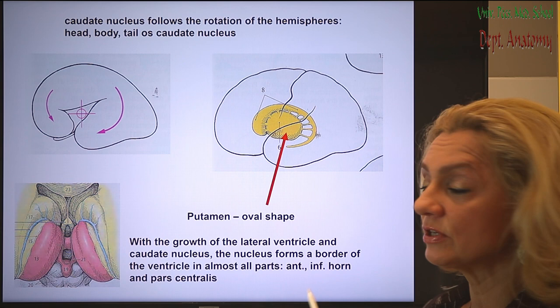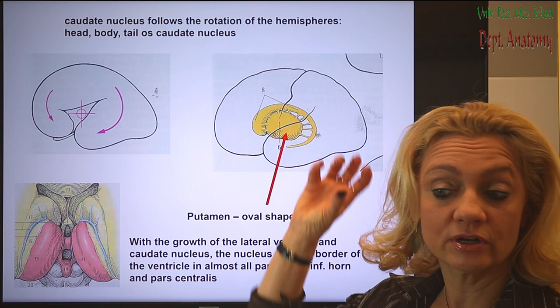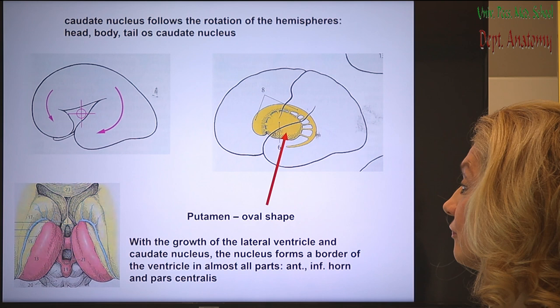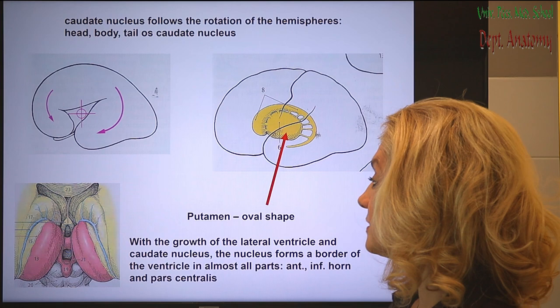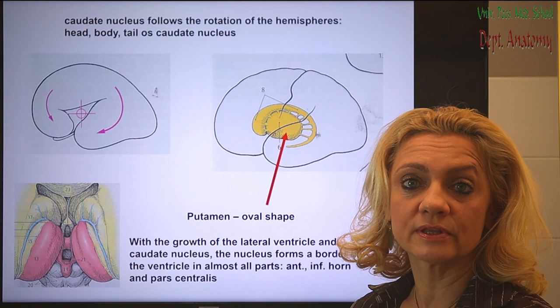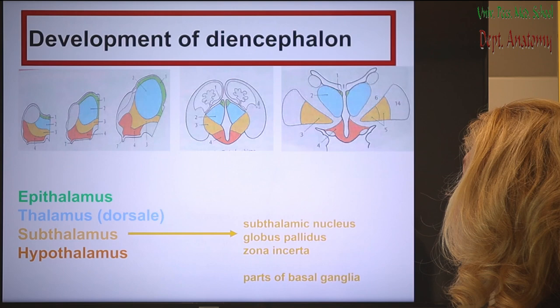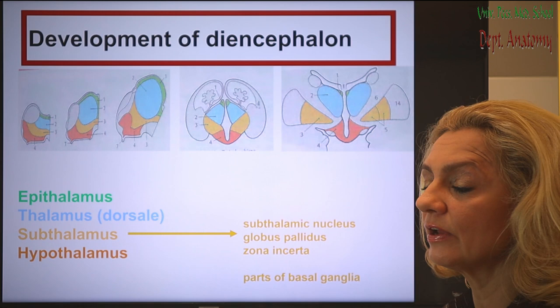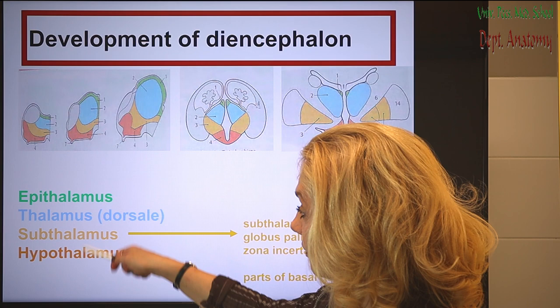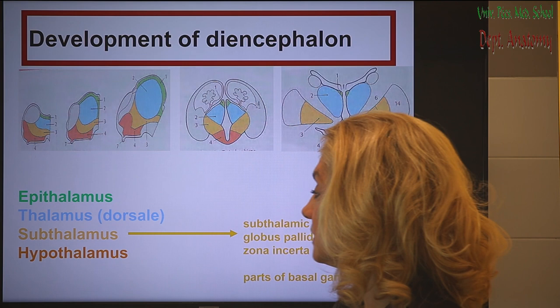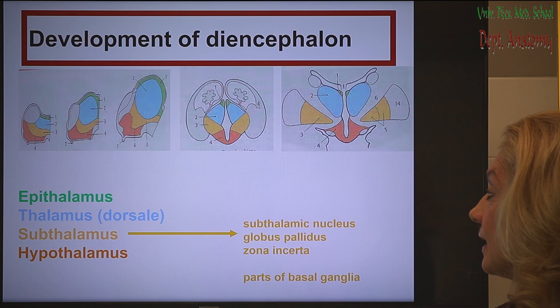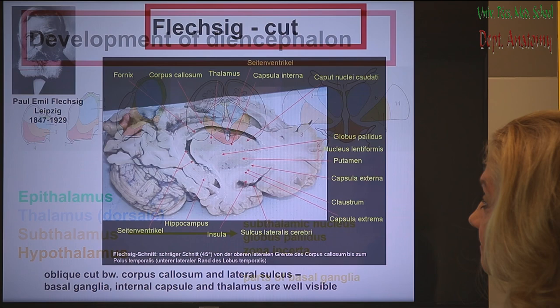The putamen does not follow this rotation, so it retains its oval shape. The lateral ventricle also follows this growth with the telencephalon and hemispheres. This is why the caudate nucleus borders parts of the lateral ventricle in almost every part except the occipital lobe. The other members of the basal ganglia develop from the subthalamus, which is part of the diencephalon — specifically the subthalamus and hypothalamus. From the subthalamus, the subthalamic nucleus and the pallidum develop.